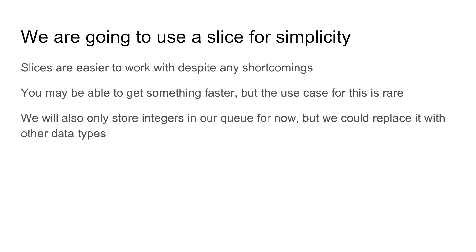We're going to use a slice, mostly just to keep things simple. Slices are easy to work with because they can dynamically change in size. You might come back and say that using a slice means it's going to have to resize more often and be a little bit slower, but you really shouldn't get caught up in those minor details right now. You just want to understand how it works, and then if you find that your queue implementation is really slowing things down, you can tweak it.